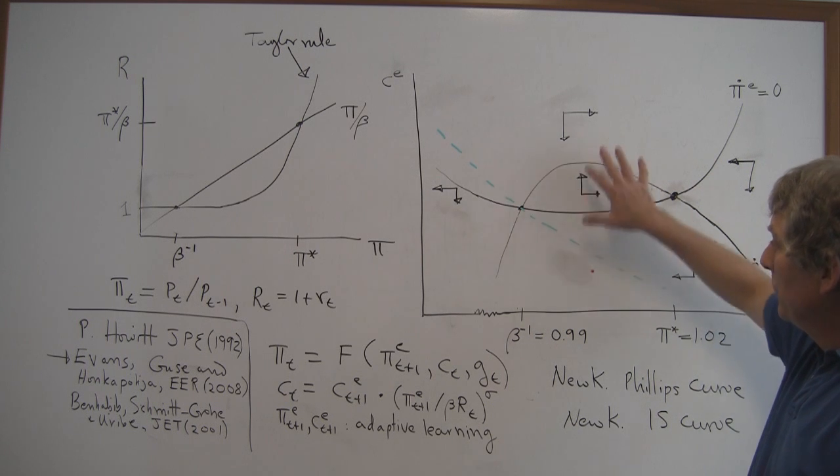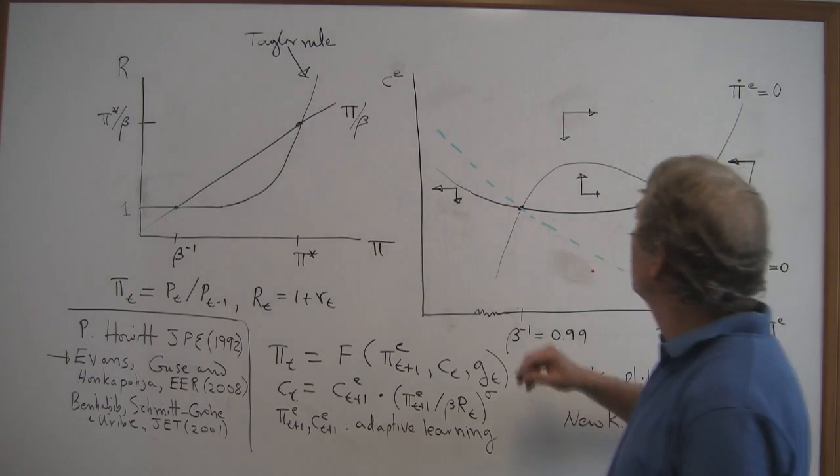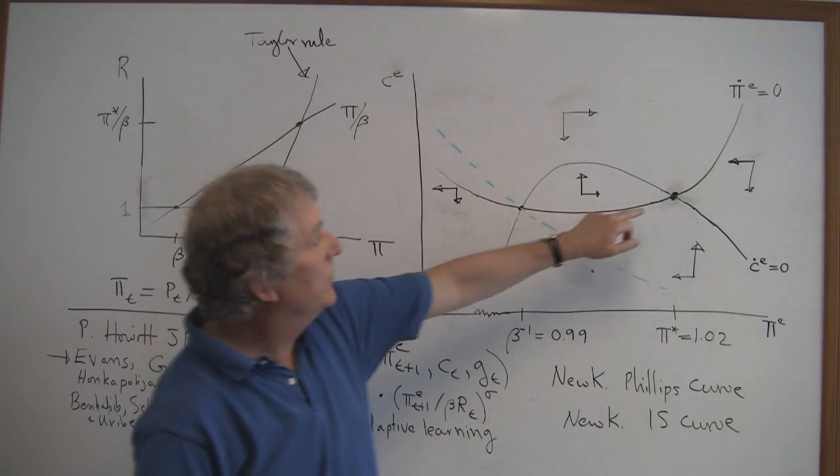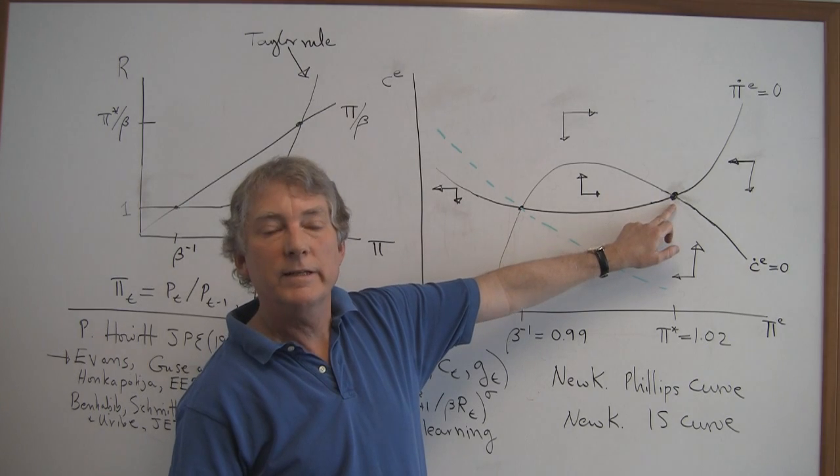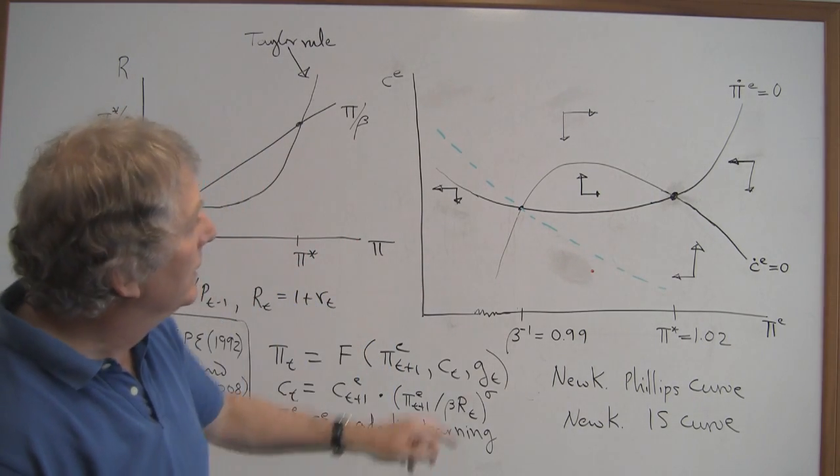So, there we have it. And when you map out the expectational dynamics under learning, you get the phase diagram shown here. And the first thing you notice is that the targeted steady state is stable under learning. Well, I should say locally stable under learning.